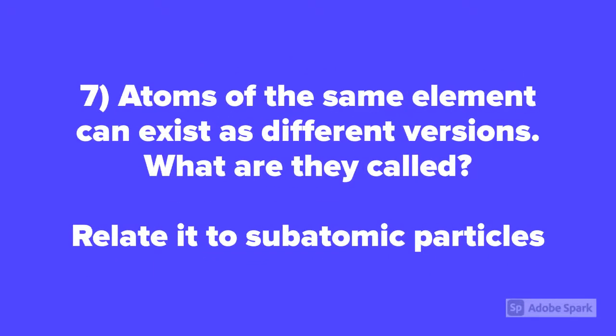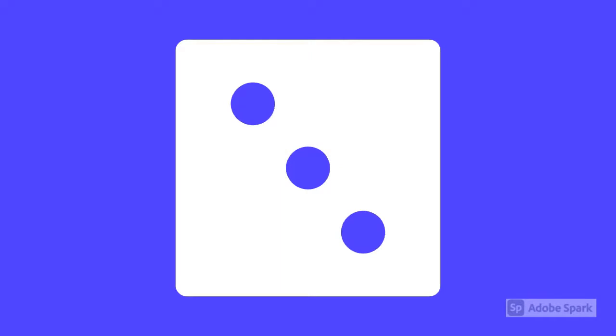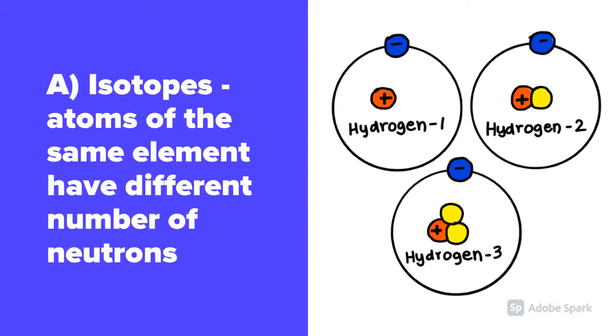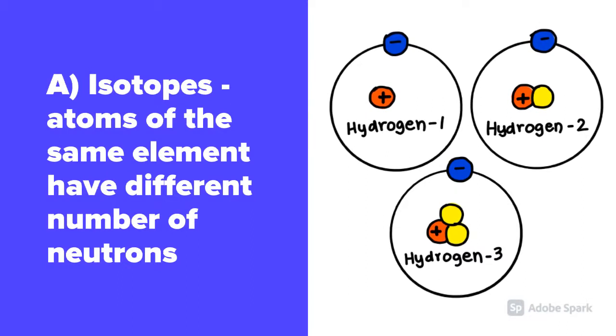Question number 7. Atoms of the same element can exist as different versions. What are they called? Related to subatomic particles. Different versions of the same element are called isotopes, wherein the atoms of the same element have different numbers of neutrons.